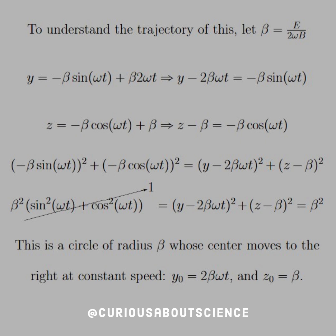And we get that this whole thing is equal to beta squared. This implies that the motion of this is a circle of radius beta whose center moves to the right at a constant speed, given that it is centered at y naught and z naught equals such. These are reflected in the graphs to follow.